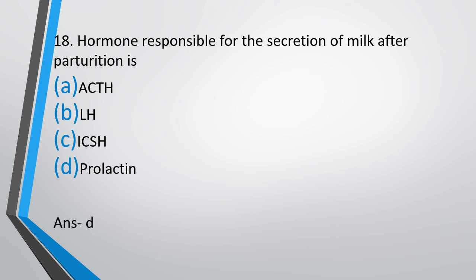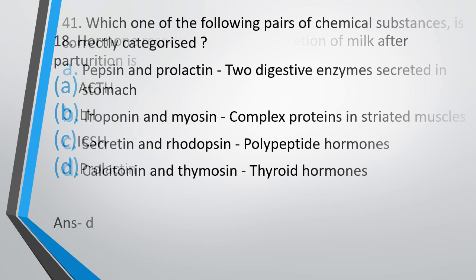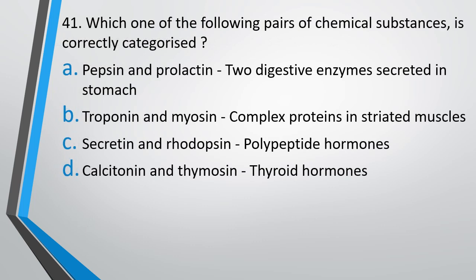Question number 41: Which one of the following pairs of chemical substances is correctly categorized? Options: A) Pepsin and prolactin — two digestive enzymes secreted in stomach; B) Troponin and myosin — complex proteins in striated muscles; C) Secretin and rhodopsin — polypeptide hormones; D) Calcitonin and thymocin — thyroid hormones. The correct answer is option B, troponin and myosin — these are complex proteins found in striated muscles.